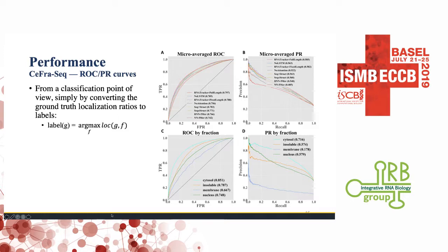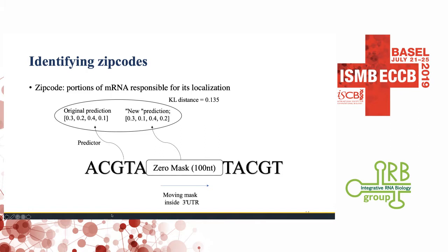In addition to regression-style scatter plots, we evaluated performance from a classification perspective by converting ground-truth localization values to labels by associating each example with the single sub-cellular fraction having the highest localization value. Our observations are consistent with the regression results.